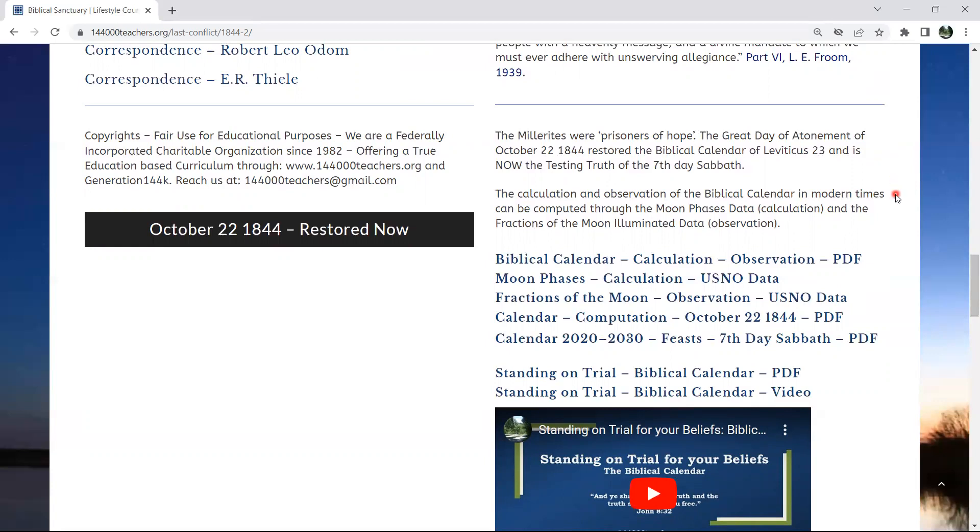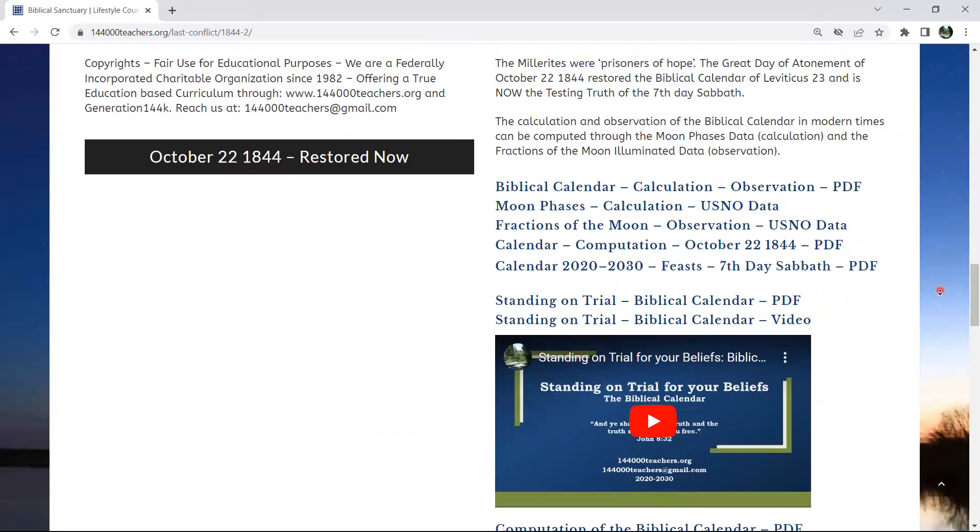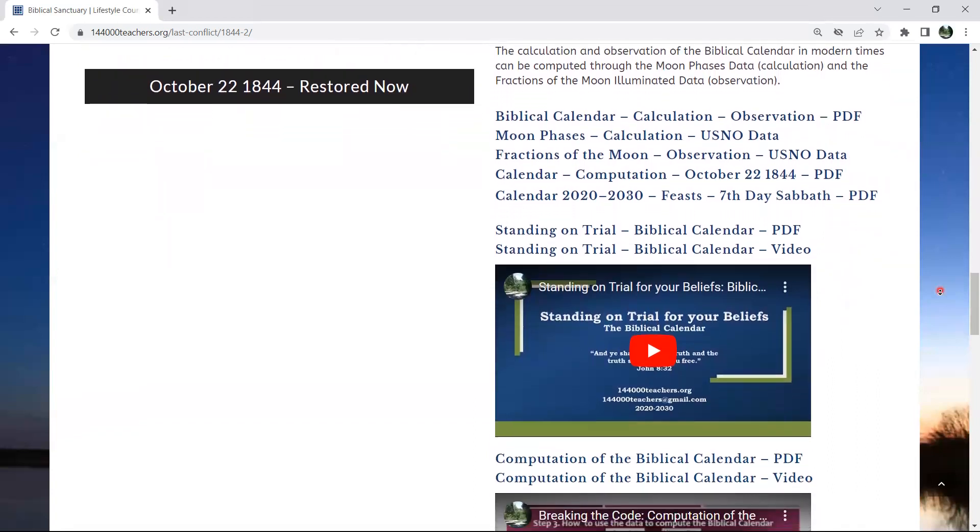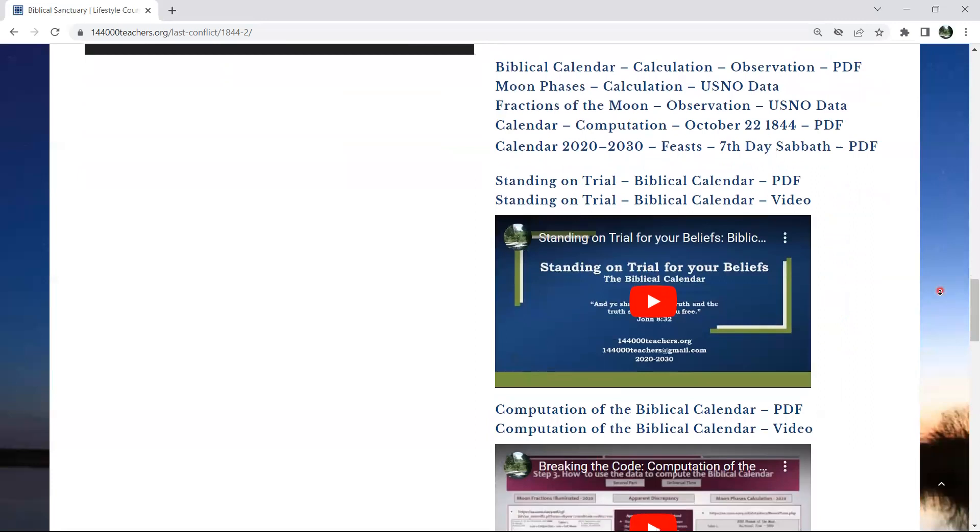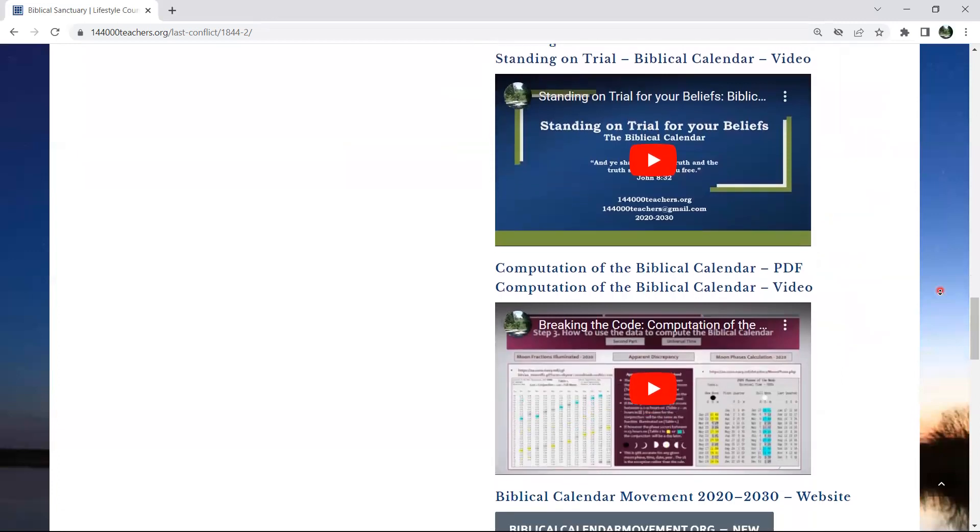restored the biblical calendar of Leviticus chapter 23 and is now the testing truth of the seven-day Sabbath. The calculation and observation of the biblical calendar in modern times can be computed through the moon phases data calculation and the fraction of the moon-eliminated data observation, which have been obtained at the U.S. Naval Observatory. And we are giving you here all these datas, and they are carrying you through in order to understand the value of how to calculate the biblical calendar, in order to restore not only the 22nd of October, 1844,